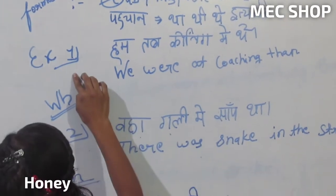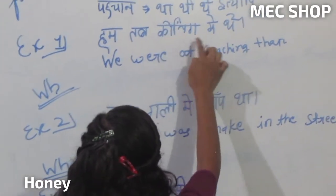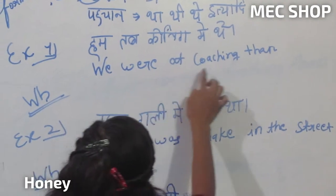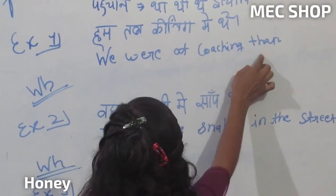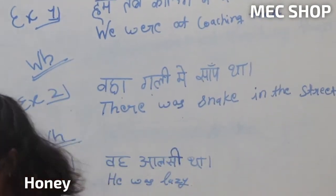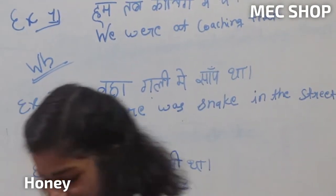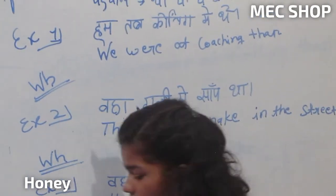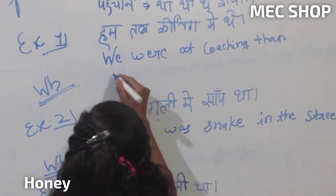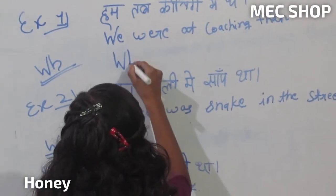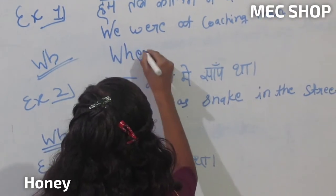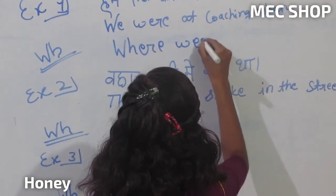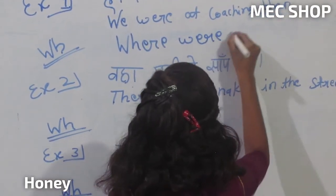Example first: Haan tab coaching me thay. We were at coaching then. W.H. question: Where were we?